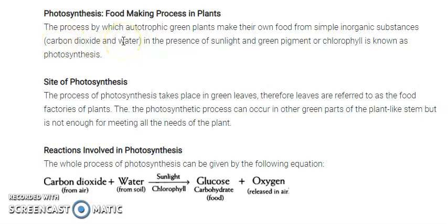Plants use two types of nutrition: first one was autotrophic and the second one was heterotrophic. Autotrophic organisms make their own food from basic elements, while heterotrophic organisms are dependent on others. So autotrophic green plants make their food themselves from simple inorganic substances.